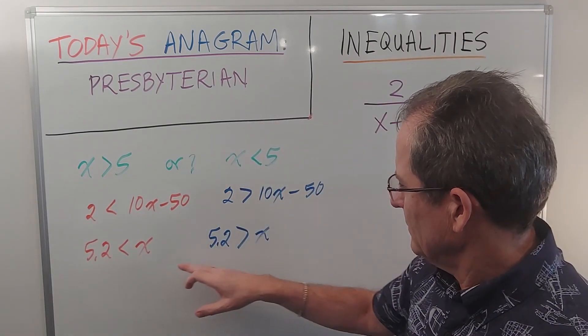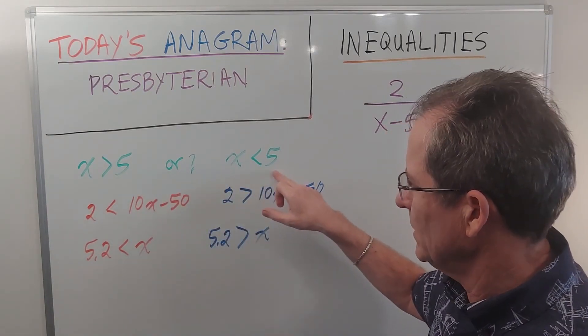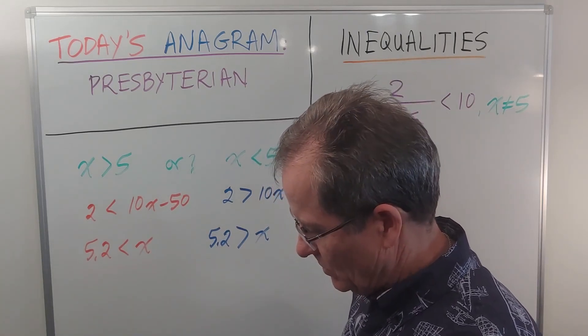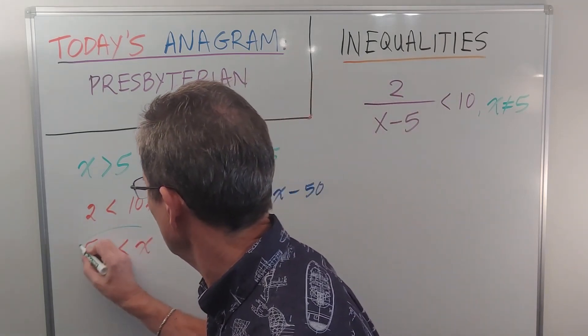Now, is that complete? Well, we've got to keep this in mind and this in mind. x bigger than 5.2 does agree with that. So this is the first part of the solution.